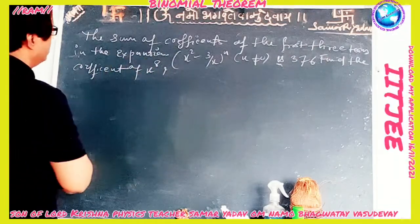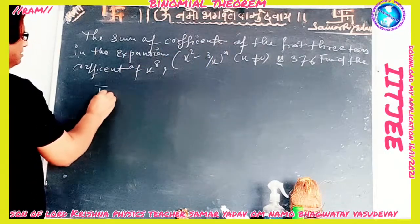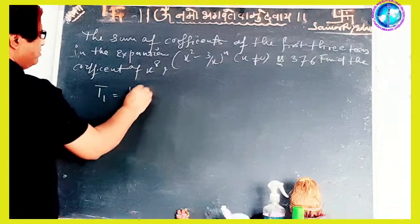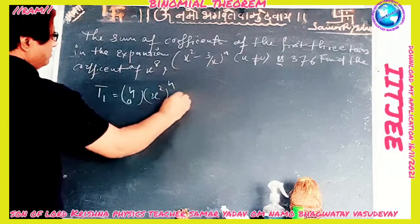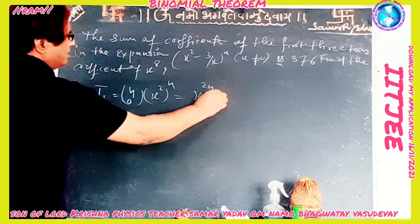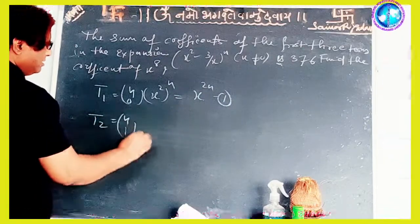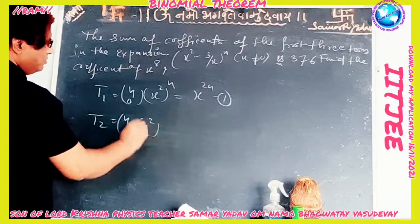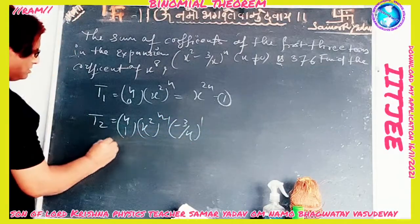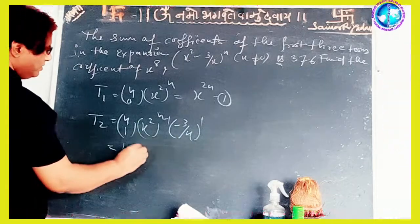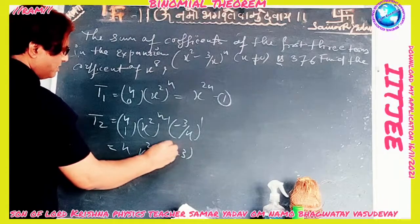We are given the sum of the coefficients of the first three terms. So we will find the first three terms. T1 = nC0 · (x²)^n = x^(2n) ... (1). Similarly, T2 = nC1 · (x²)^(n-1) · (-3/x)^1, which gives n · x^(2n-2) · (-3) · x^(-1).